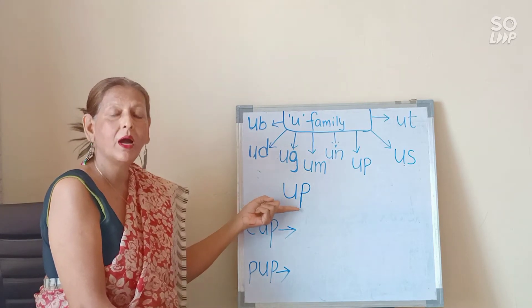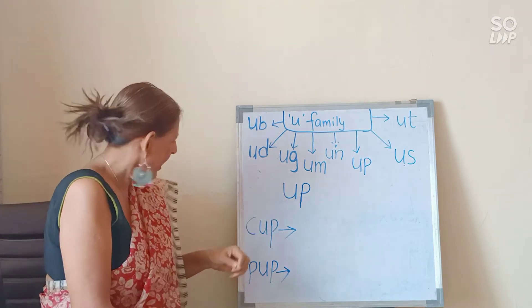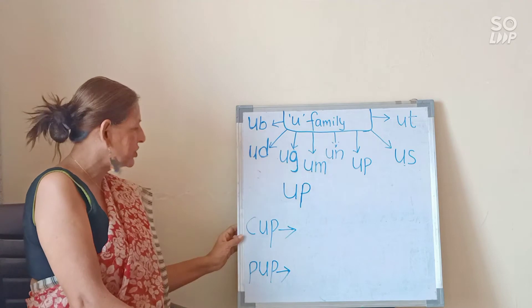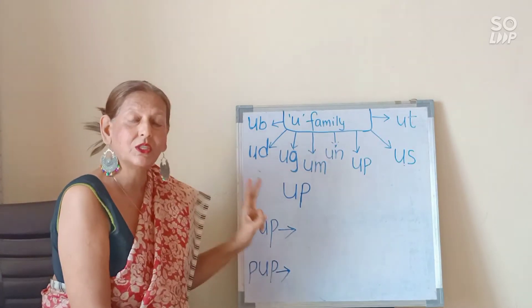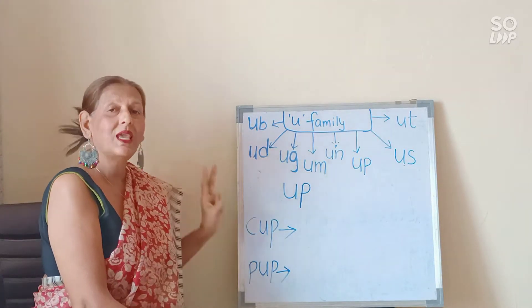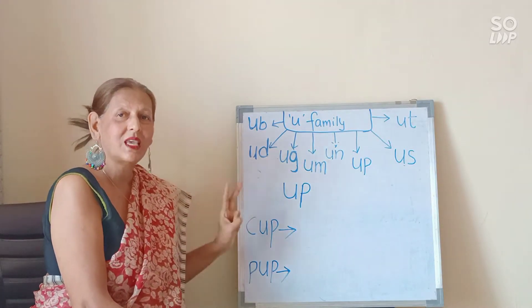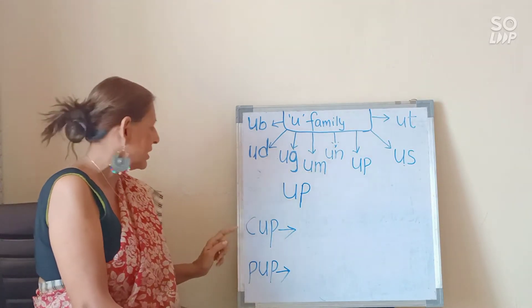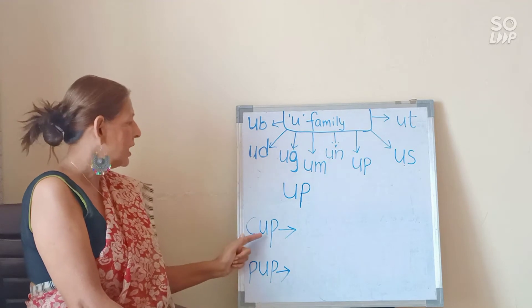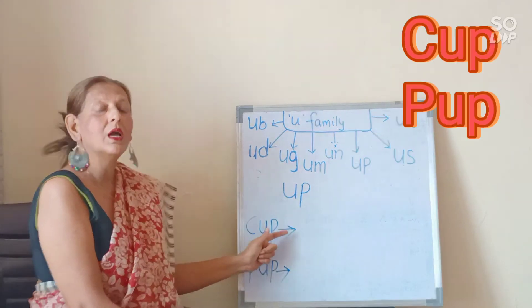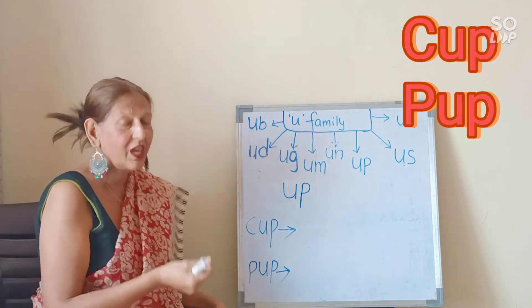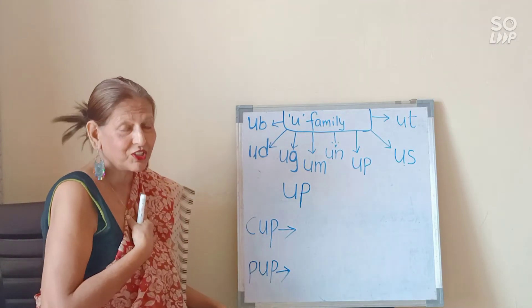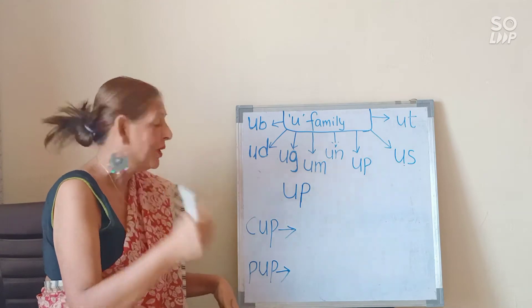And I have listed two CVC words. 'Cup' — ka, ag, pa — the thing in which we drink tea. I drink tea in a cup. And 'pup' — pa, ag, pa — the baby of a doggy.